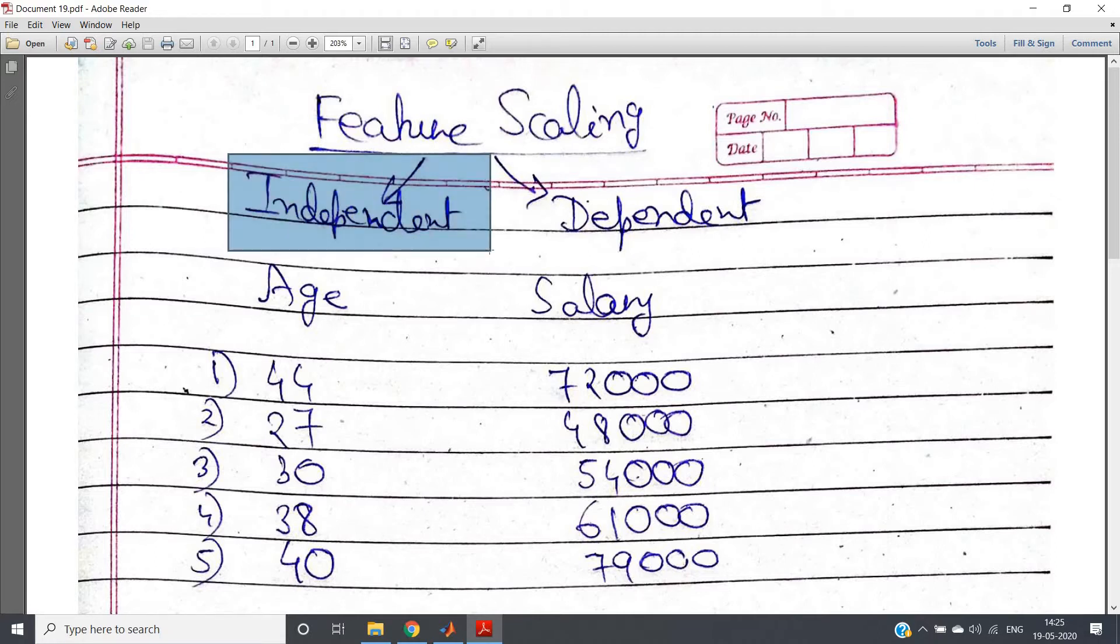Generally in machine learning algorithms, whatever dataset we use, there are mainly two components: one is independent data, another one is dependent data. We try to predict or classify our dependent data based on our independent data.